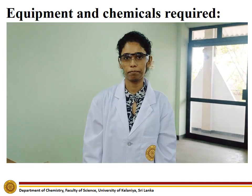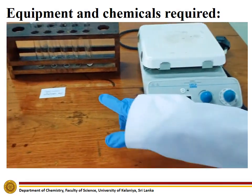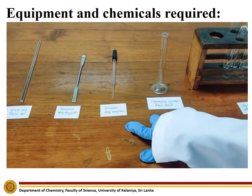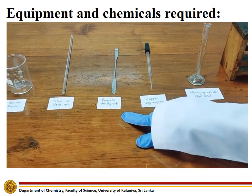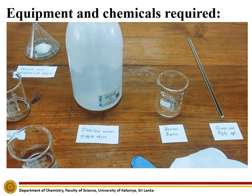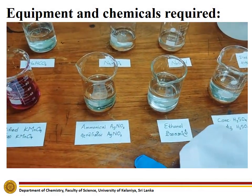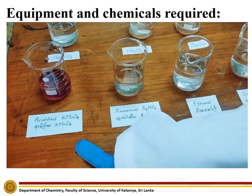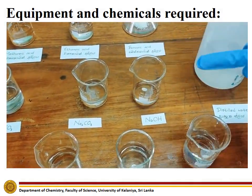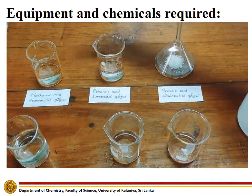The chemicals and equipment required to carry out this experiment are: hot plate, test tubes, measuring cylinder, dropper, spatula, glass rod, beaker, distilled water, concentrated sulfuric acid, ethanol, ammonical silver nitrate, acidified potassium permanganate, sodium bicarbonate solution, sodium carbonate solution, sodium hydroxide solution, benzoic acid, ethanoic acid, and methanoic acid.